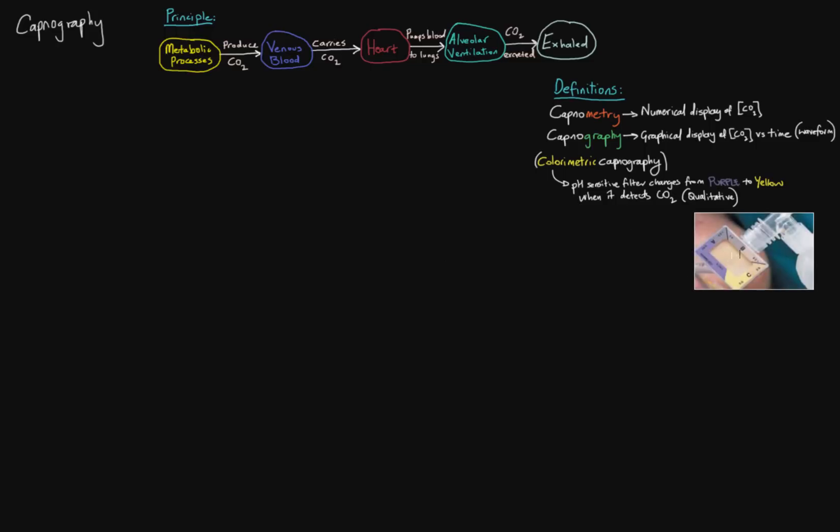So they have a pH-sensitive filter here that will change from purple to yellow when it detects carbon dioxide. And I took this picture from the New England Journal of Medicine article that I've referenced in the comments that a lot of this video is based off of. So those are some of the terms: capnometry, capnography, and colorimetric CO2 detection.